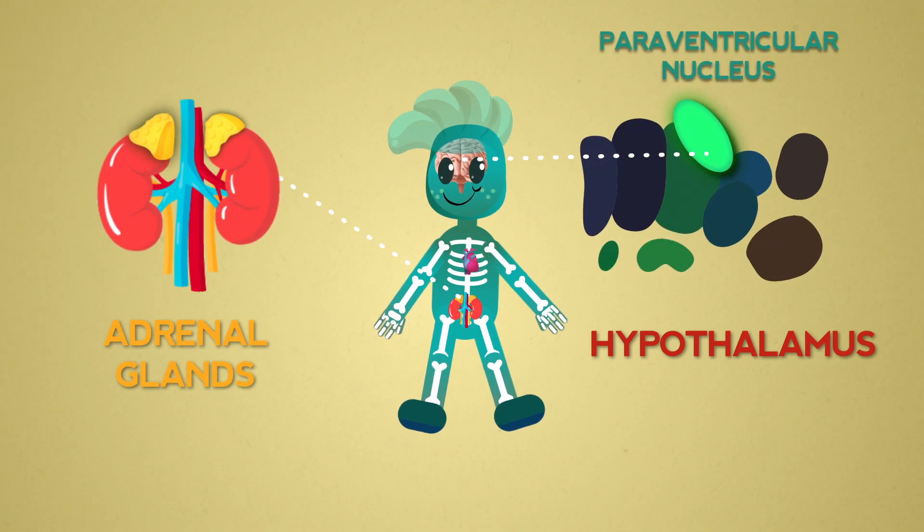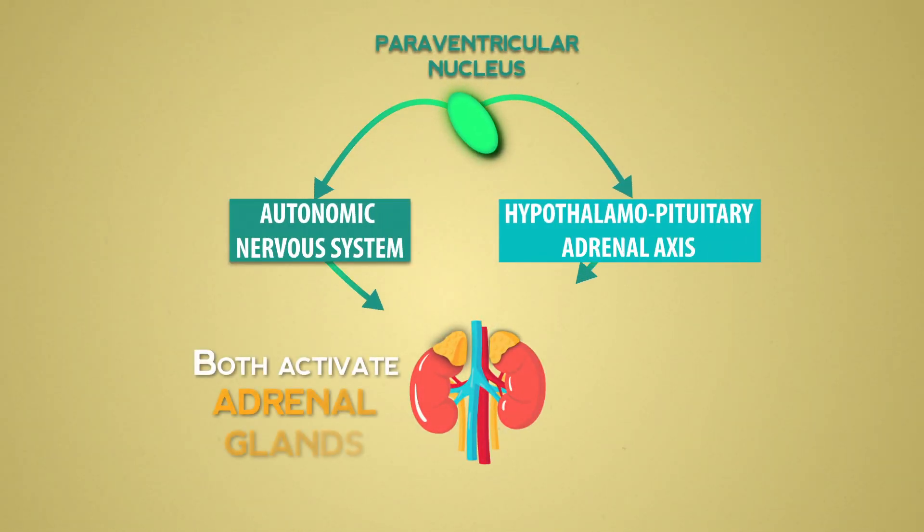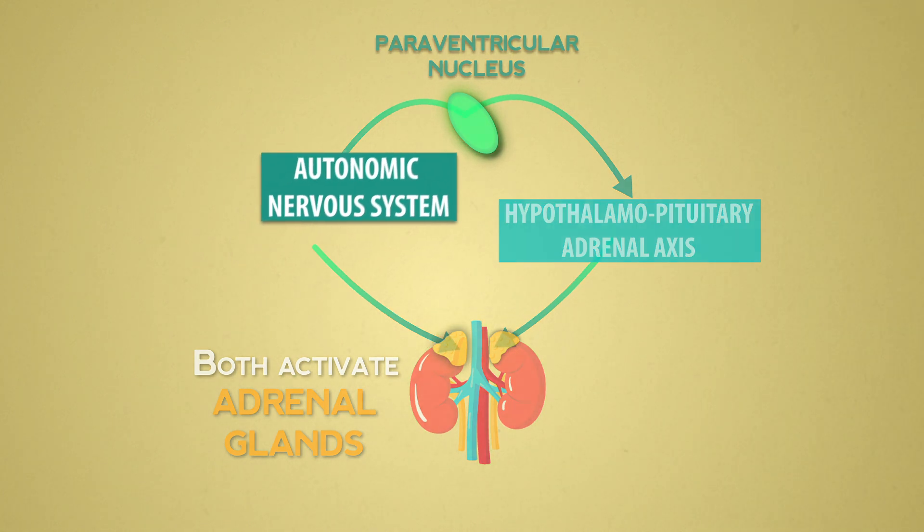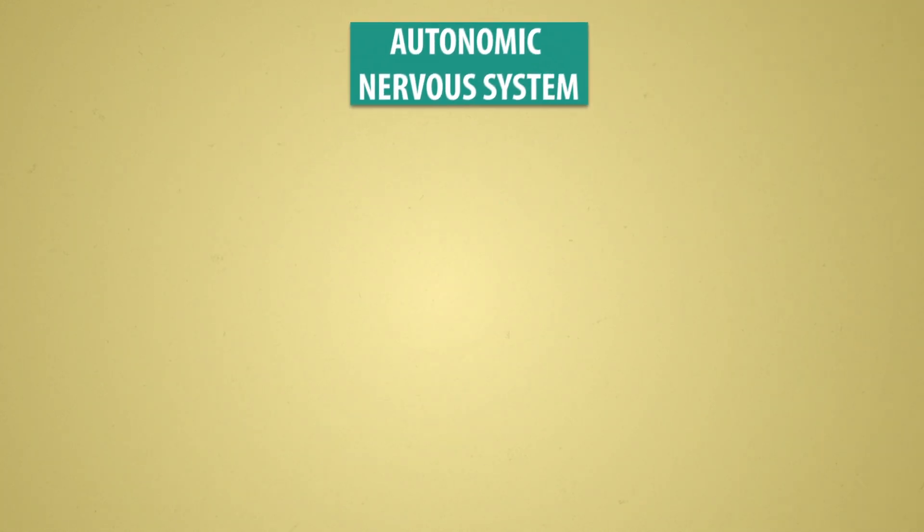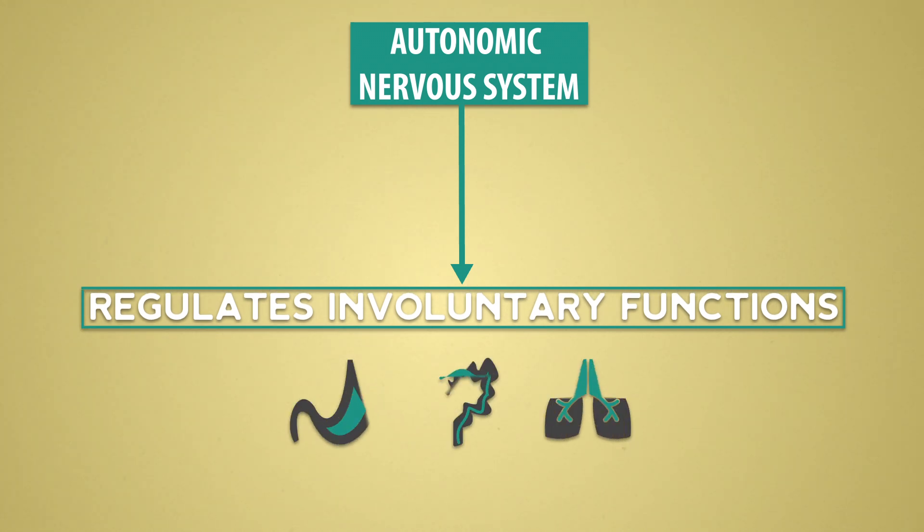It leads to the simultaneous activation of two systems, which target the same area: the adrenal glands. The first one is the autonomic nervous system, the component of the nervous system that regulates involuntary functions, such as digestion or breathing.